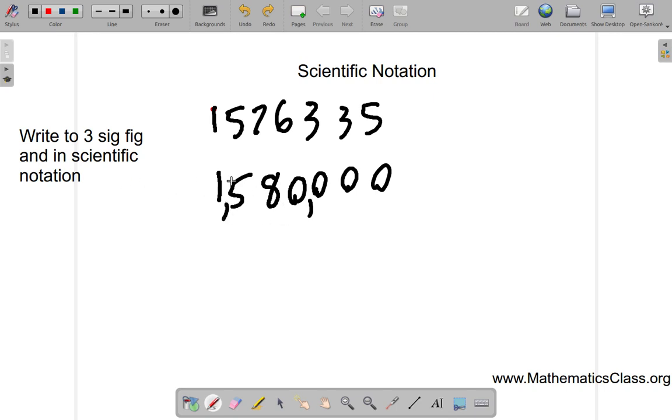But now in scientific notation, remember the rule: the first digit, then the point. The first digit to the left of the point must be one through nine, nothing more, nothing else.